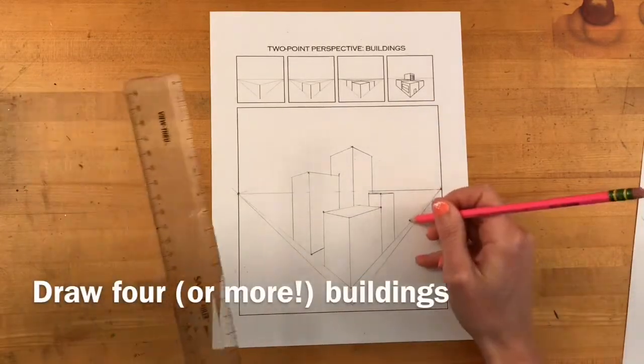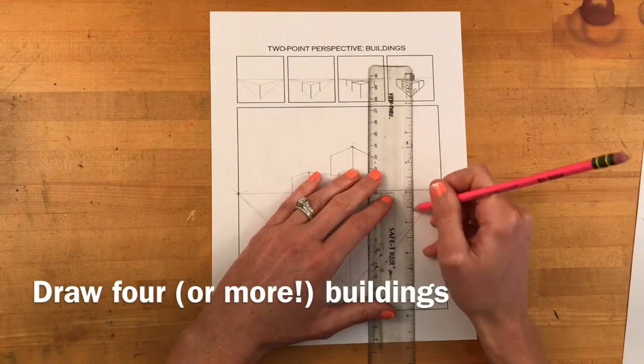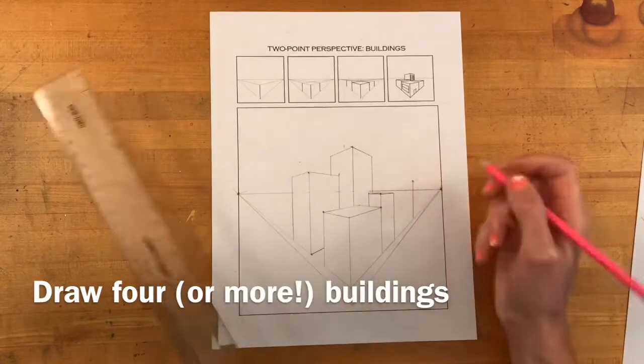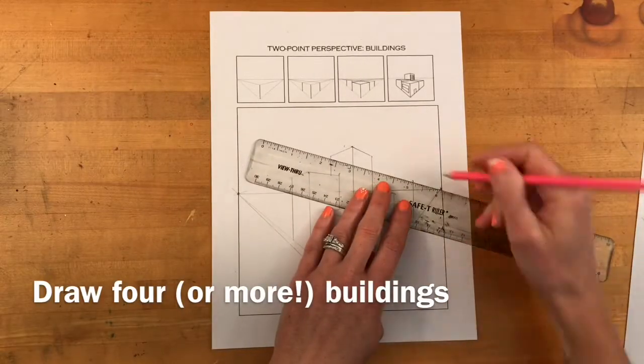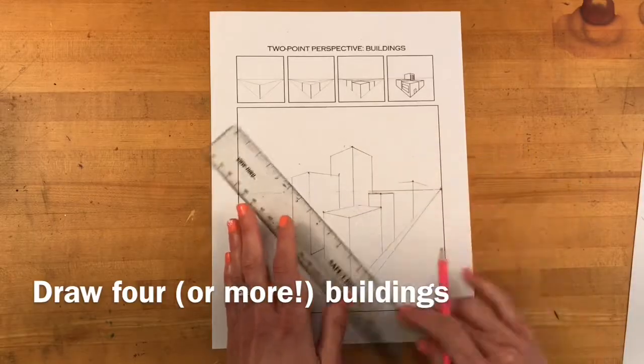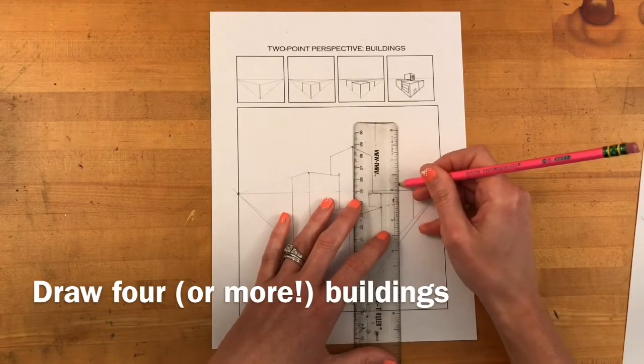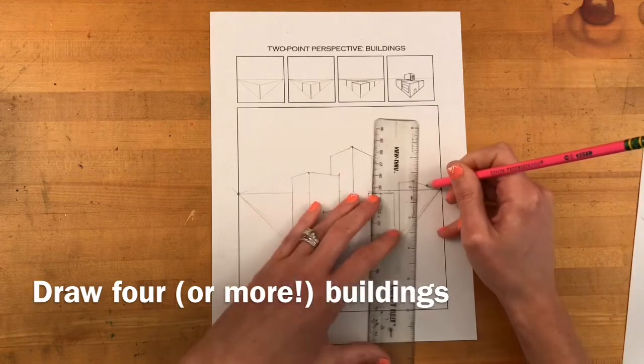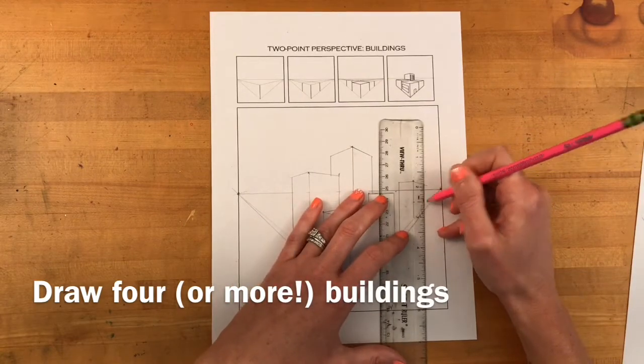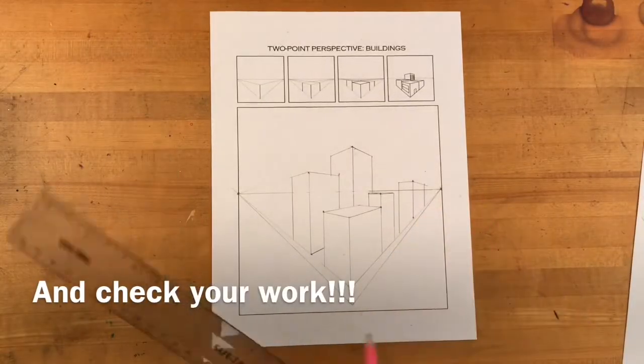You want to create at least four or more buildings when practicing on this worksheet. I'm going to make a fifth building and this time I'm making my building closer to the vanishing point on the right. And you'll see that this makes it a little bit distorted. The closer you get to a vanishing point, the more distortion you'll see on that one side because the vanishing points are the areas that are furthest away from the viewer.